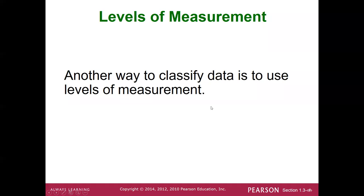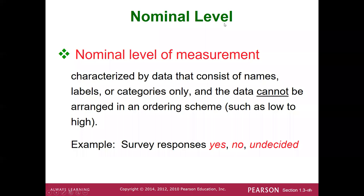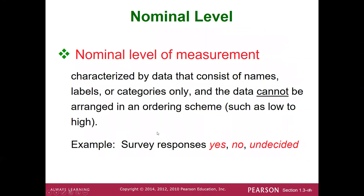Another way to classify data is by levels of measurement. The nominal level cannot be arranged in an ordering scheme — a survey response of yes, no, or undecided, or hair color, cannot meaningfully have numbers assigned to it. Nominal values cannot be put to a corresponding numerical or quantitative type of response.